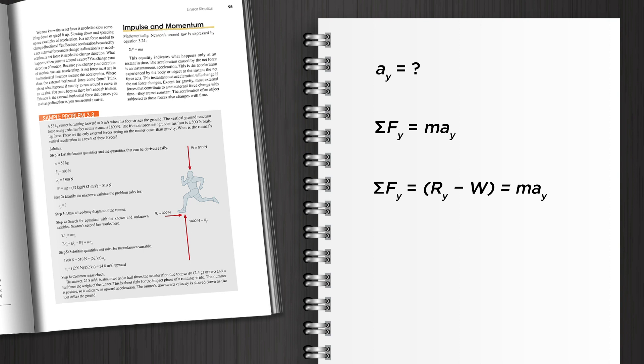Finally, we can substitute our known quantities for the variables. 1,800 newtons minus 510 newtons equals 52 kilograms times vertical acceleration.